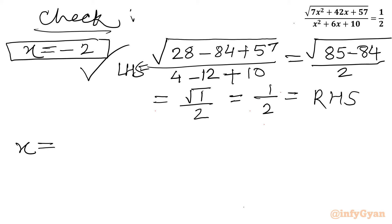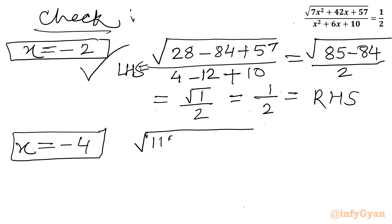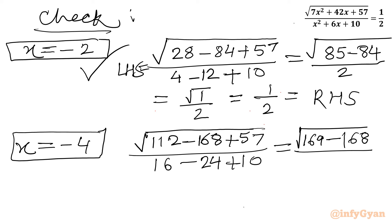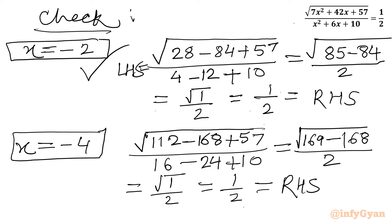Now check x = -4: LHS is √ of [7(16) + 42(-4) + 57] / [16 + 6(-4) + 10] = √(112 - 168 + 57) / (16 - 24 + 10) = √(169/2) — wait: numerator 112 + 57 = 169, minus 168 = 1; denominator 16 - 24 + 10 = 2. So LHS = √(1/2) = 1/2 = RHS. Hence verified.